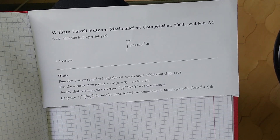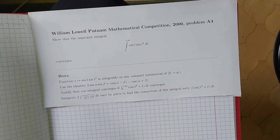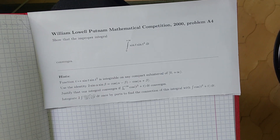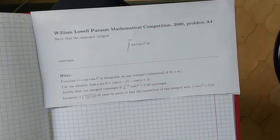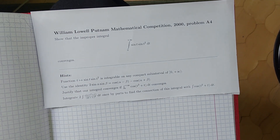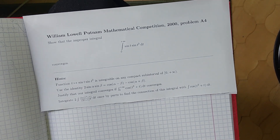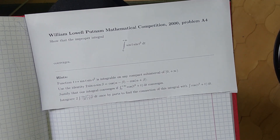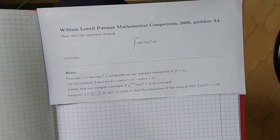Then — the crucial and least obvious part — integrate the following integral: 2 sine of t squared plus t dt over 2t plus 1 squared, integrated once by parts, to find the connection of this integral with cosine of t squared plus t dt. And that should be enough. Give this problem a try and I will see you in just a minute.